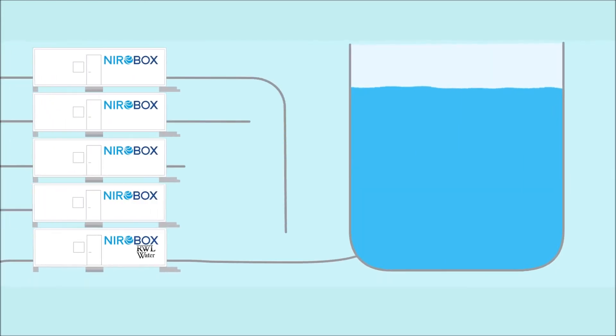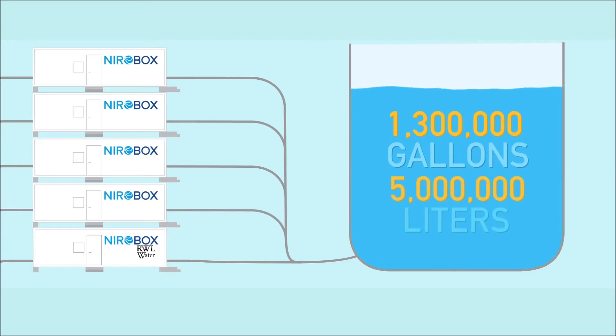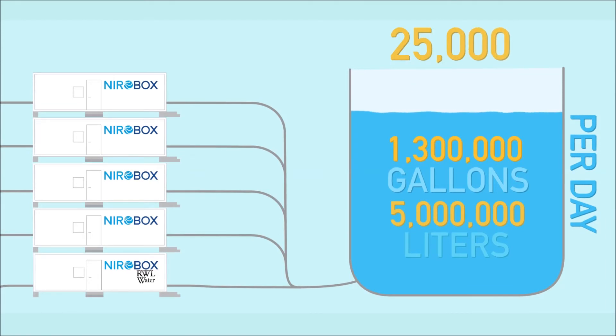Five units, used in parallel, can produce 1.3 million gallons, nearly 5 million liters, of drinking water per day. Enough water for around 25,000 people.